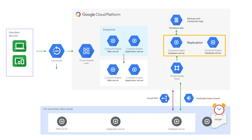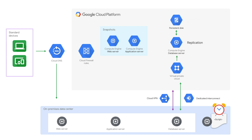Test that the application works as expected by simulating the user scenarios on the production environment. Configure Cloud DNS to point to the on-premise web service. Then delete the web server and the application server instances that are running in Google Cloud. Resize the database server on Google Cloud back to the minimum instance size that can accept replicated data from the on-premise production database. Then configure replication between the on-premise database server and the database server in Google Cloud by following the instructions for your specific database software.